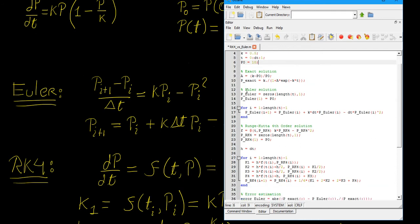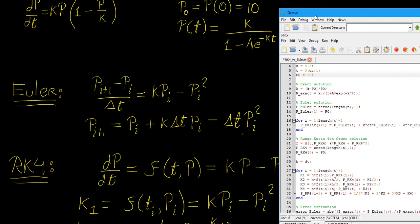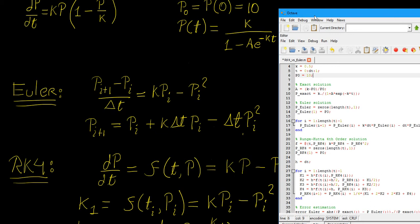The Euler solution is written in this chunk of the code. We create an empty vector of values for Euler solution. Then we input the initial value into it and we create the loop where we put this update equation here. That's the update equation for the Euler method.